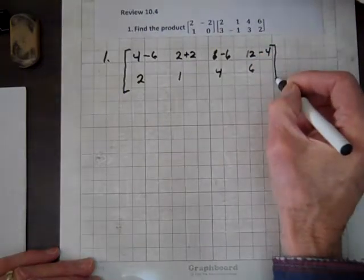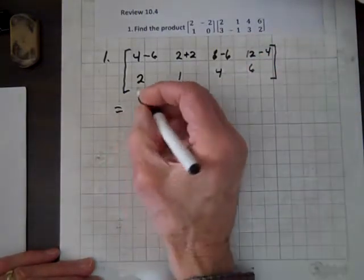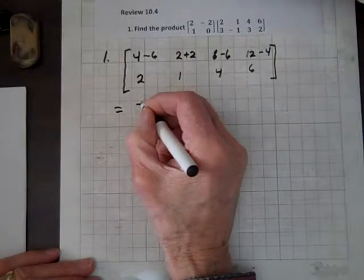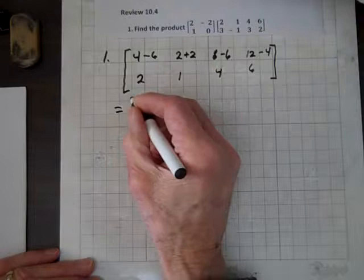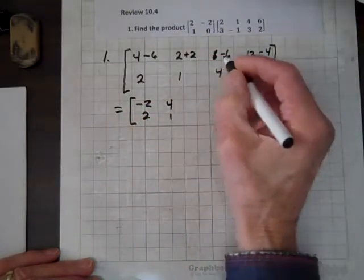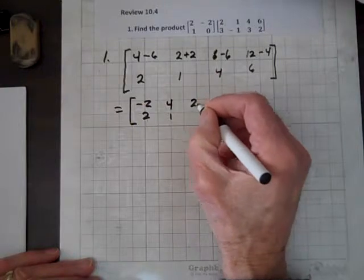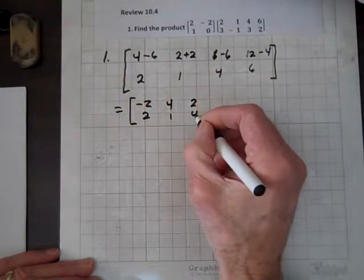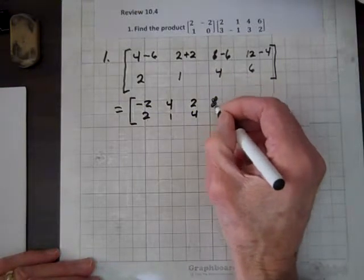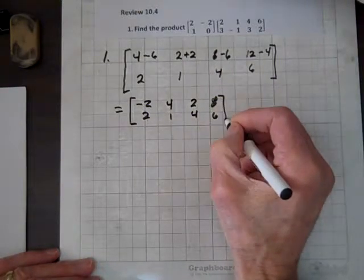Now we sum these values, and we've got minus 2, 2, and 4, 1, and 2, 4, and 8 and 6. And there's our product. We've done it.